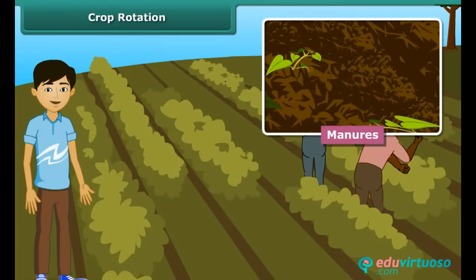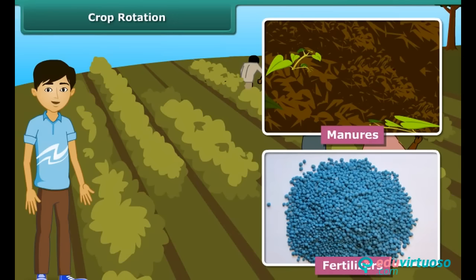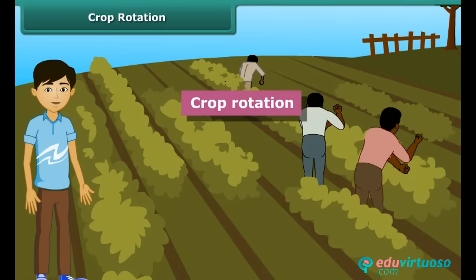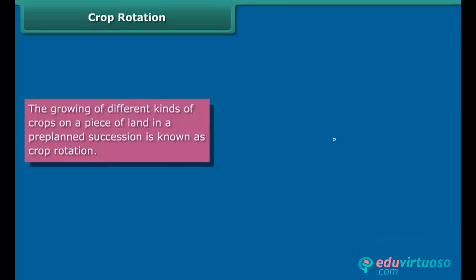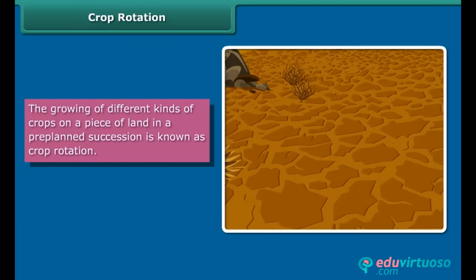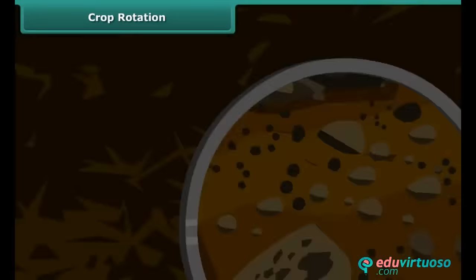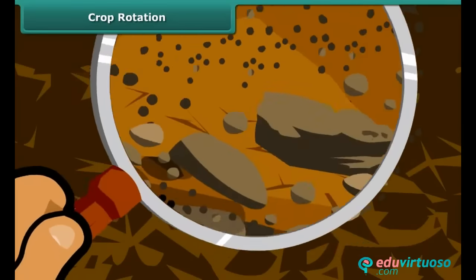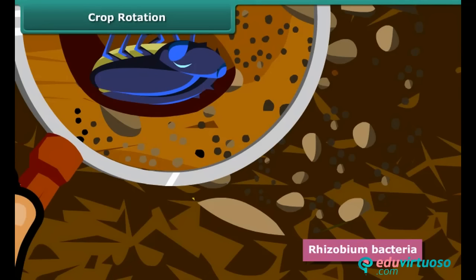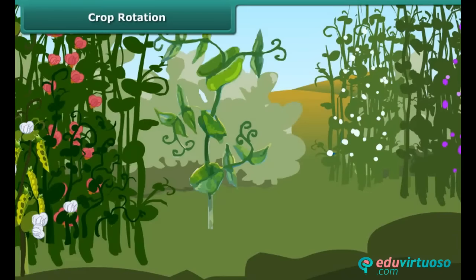Now let us know another method of replenishing the soil with nutrients — it is known as crop rotation. When a cereal crop like rice is grown in the soil, it uses up a lot of nitrogenous salts. If another cereal crop is grown in the same soil, the soil becomes nitrogen deficient. So by rotation, a leguminous crop should be grown after a cereal crop. Some bacteria present in the root nodules of leguminous plants, known as rhizobium bacteria, fix atmospheric nitrogen to form nitrogen compounds. When these compounds go into the soil, it becomes more fertile, resulting in increased food grain production.